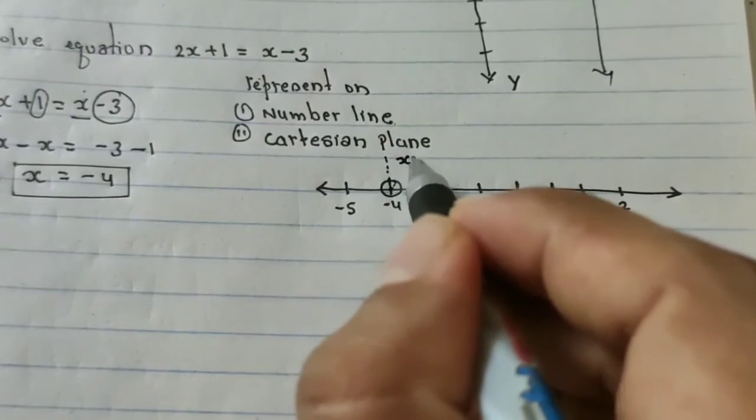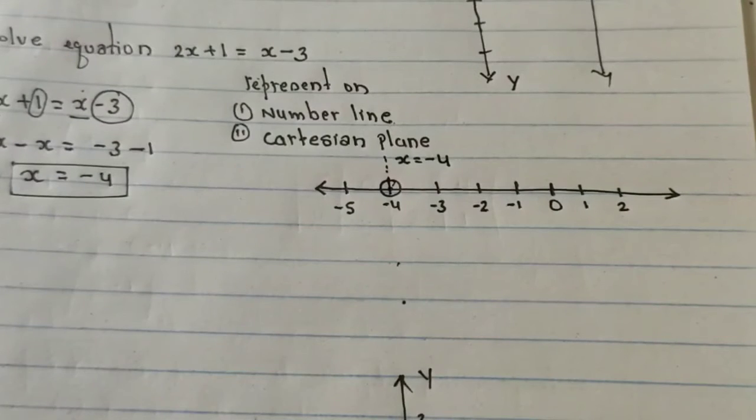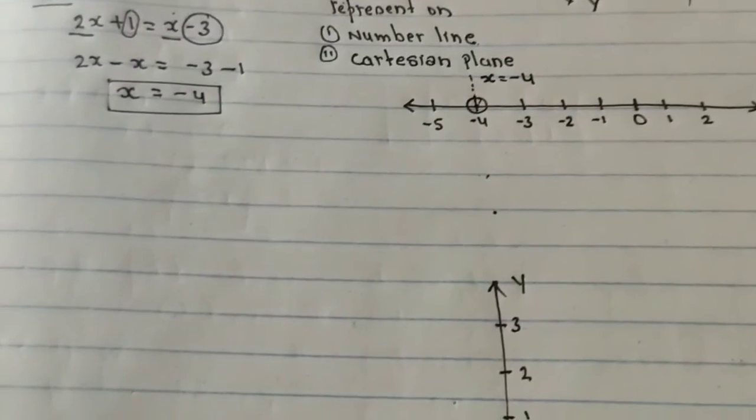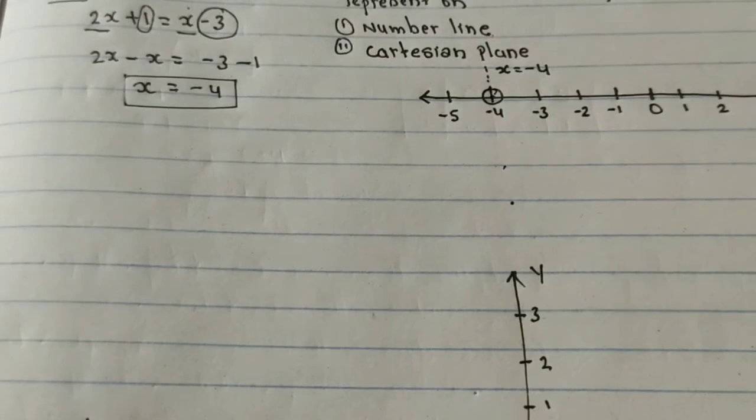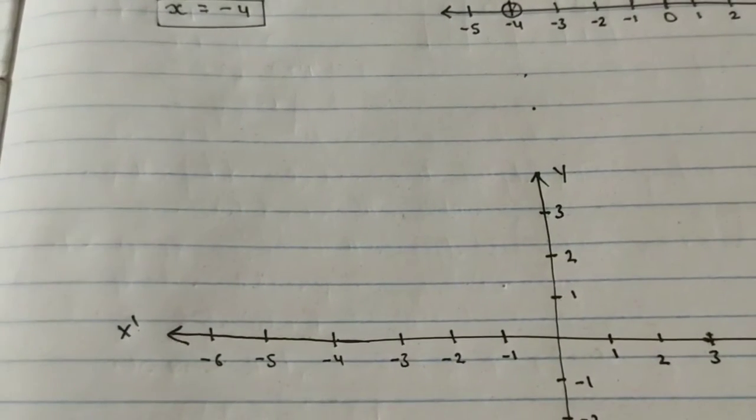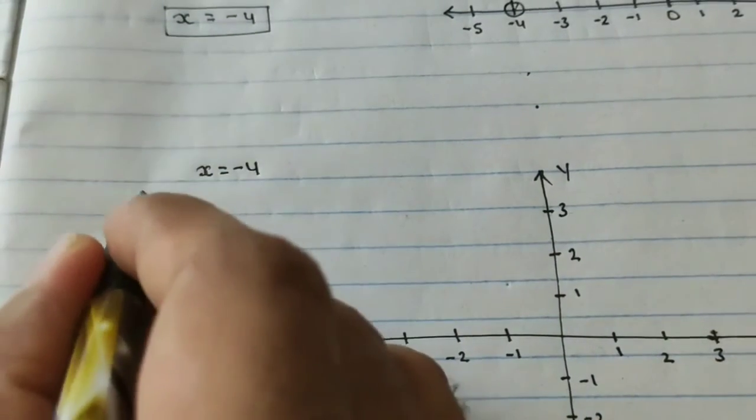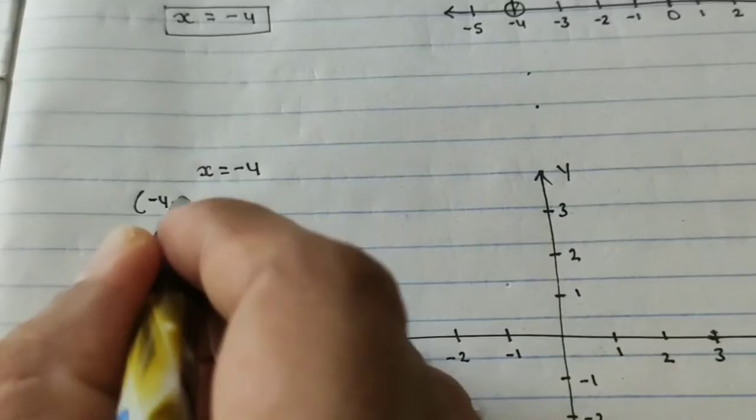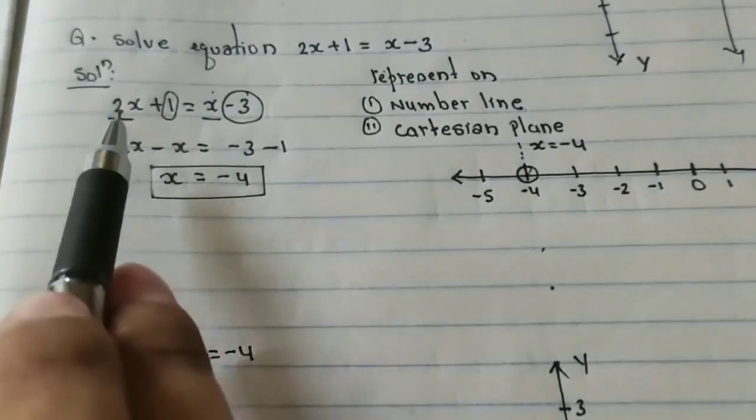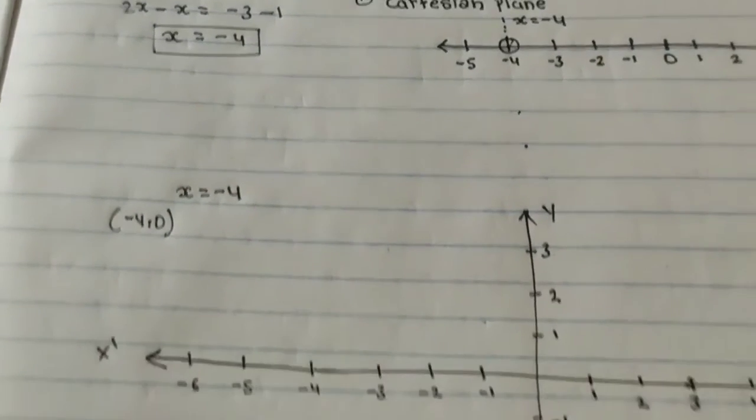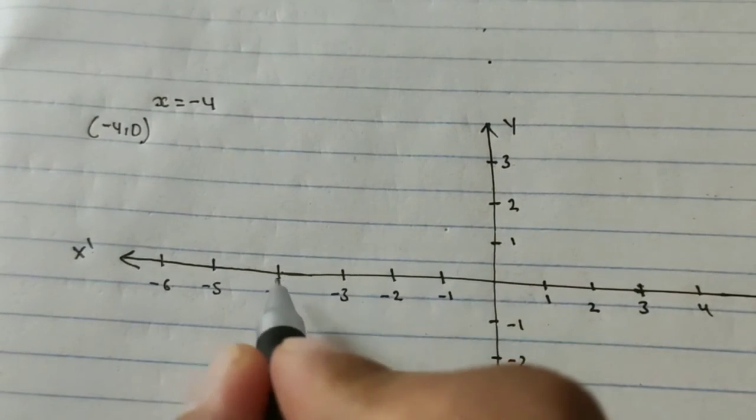And on your Cartesian plane, you have got your x = -4. It means you can write (-4, 0) because y is not given here, not mentioned about the y, so y is your 0. So here also you get this x = -4 and 0 means this point.